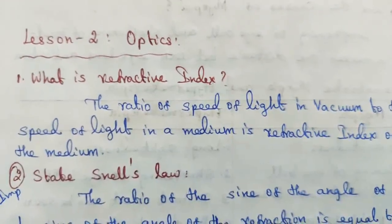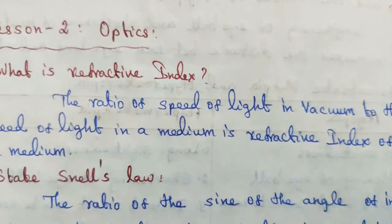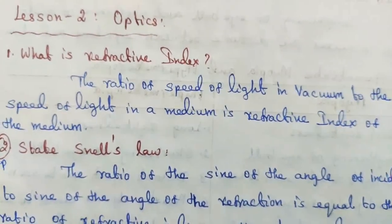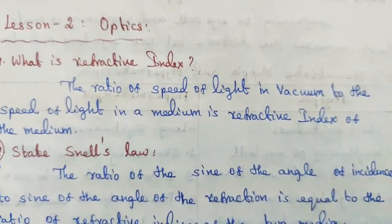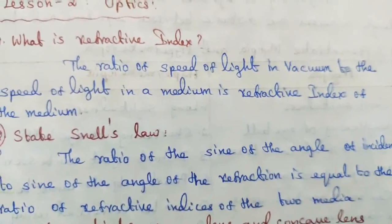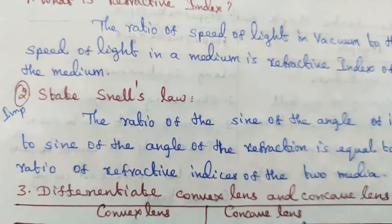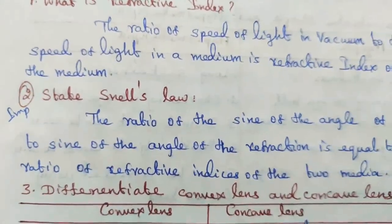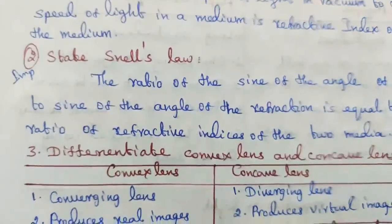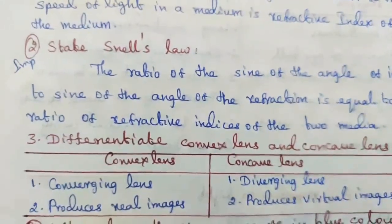Question number two, important: state Snell's law. The ratio of the sine of the angle of incidence to the sine of the angle of refraction is equal to the ratio of refractive indices of the two media. Question number three: differentiate convex lens and concave lens. Convex lens is a converging lens; concave lens is a diverging lens. Convex lens produces real images; concave lens produces virtual images.